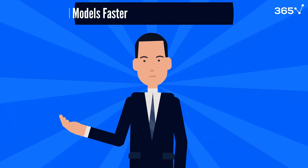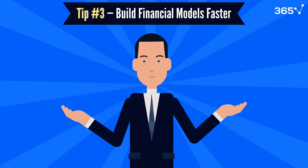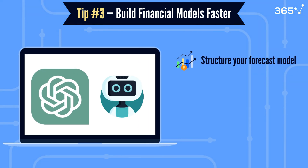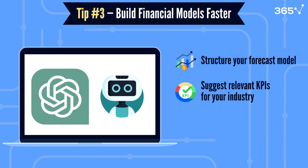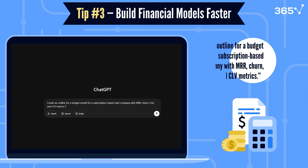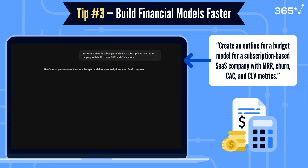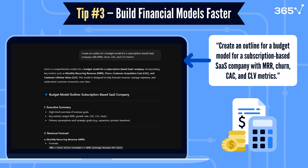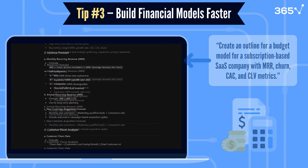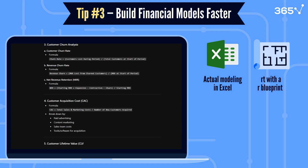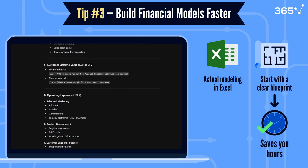Let's move on to tip number three: build financial models faster. ChatGPT can help you structure your forecast model, suggest relevant KPIs for your industry, and create sensitivity or scenario analyses. If you're building a new budget template, you can ask: 'Create an outline for a budget model for a subscription-based SaaS company with MRR, churn, CAC, and CLV metrics.' You'll still do the actual modeling in Excel, but you'll start with a clear blueprint, saving you hours.